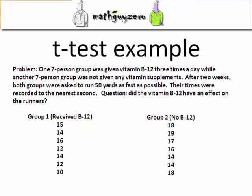The problem says that one seven person group was given vitamin B12 three times a day, while another seven person group was not given any vitamin supplements. After two weeks, both groups were asked to run 50 yards as fast as possible. Their times were recorded to the nearest second. Here's the question: Did the vitamin B12 have an effect on the runners?